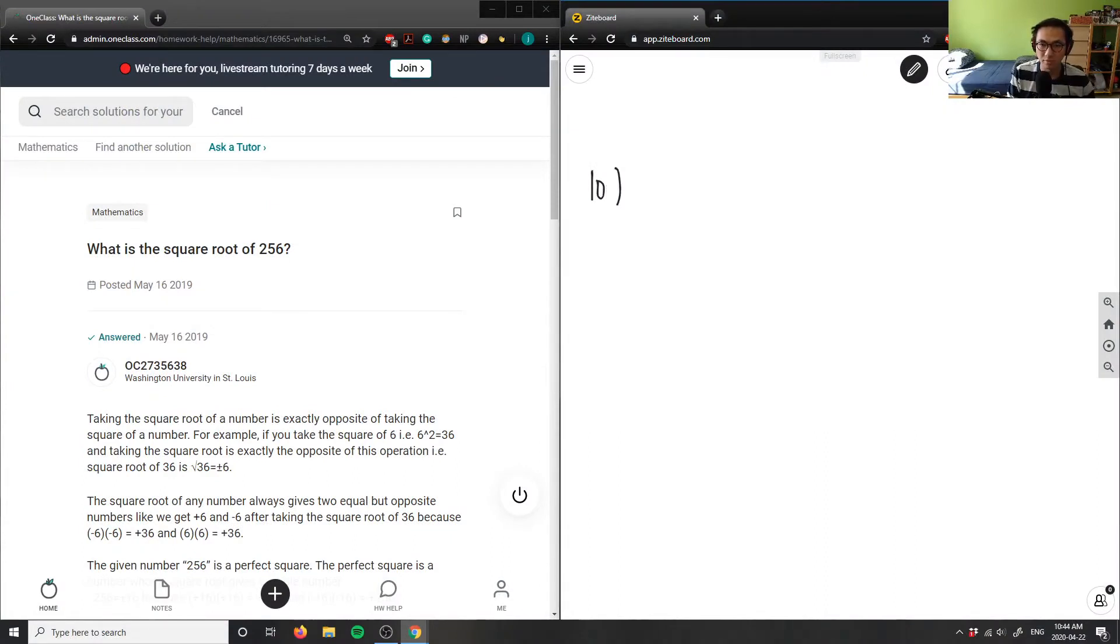So it says what is the square root of 256. Let me redraw this and I'm going to assume that they're looking for exact values here. So square root of 256, what is the square root of 256? So what we can do first is...